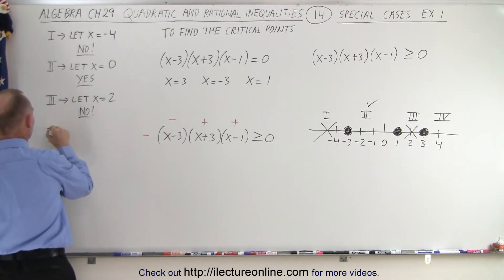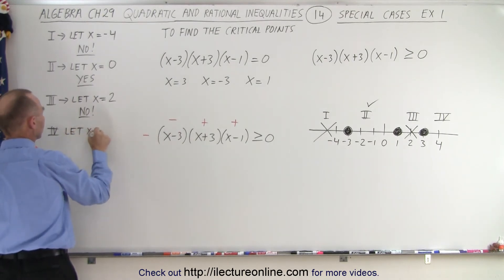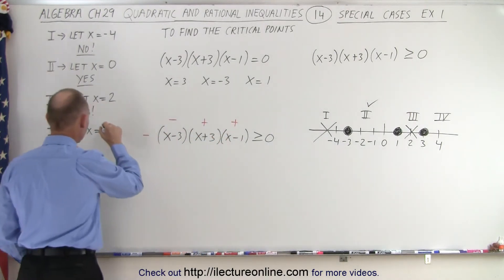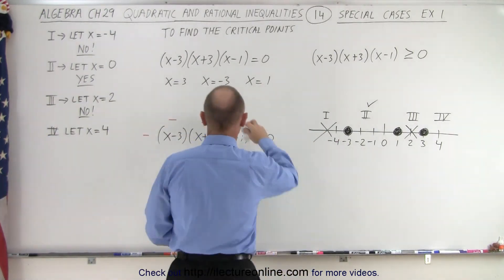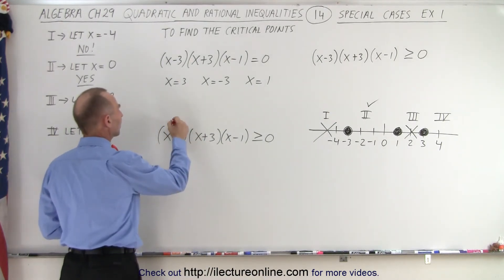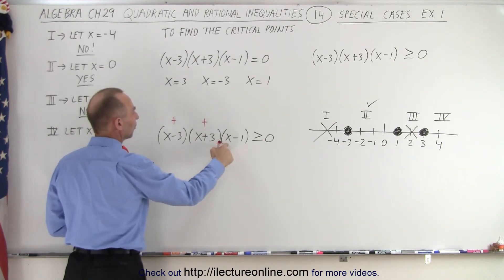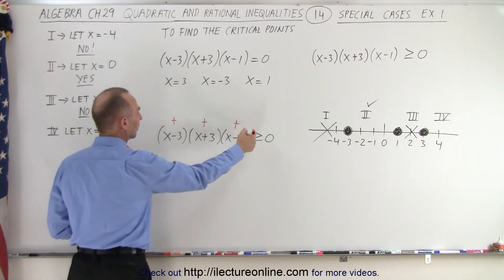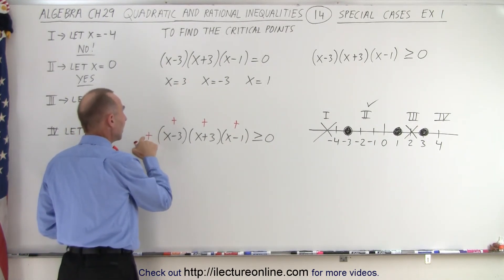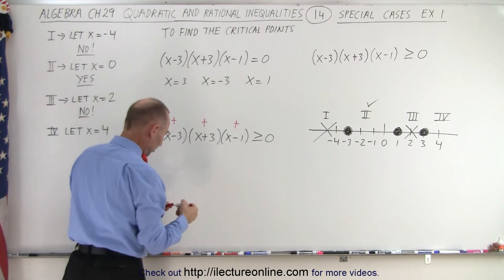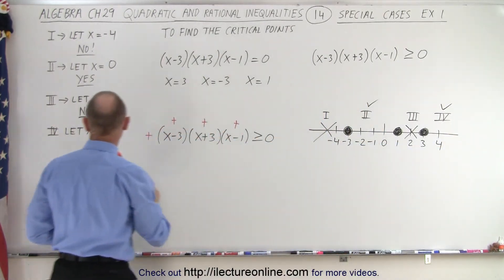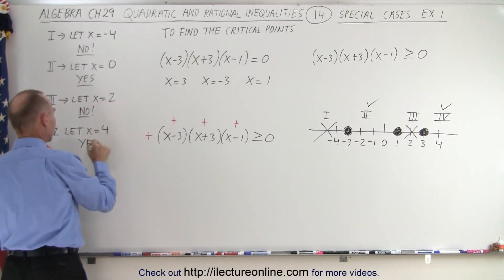Finally, region 4. Let x equal 4. Plugging in: 4 minus 3 is 1 (positive), 4 plus 3 is 7 (positive), and 4 minus 1 is 3 (positive). Since everything is positive, when we multiply we get a positive result. Positive is definitely bigger than zero, which means region 4 is part of the solution set.